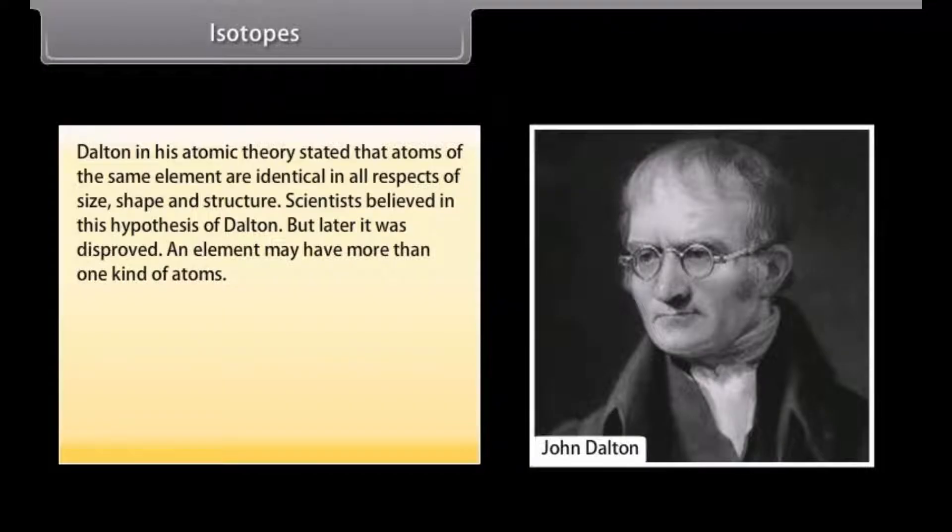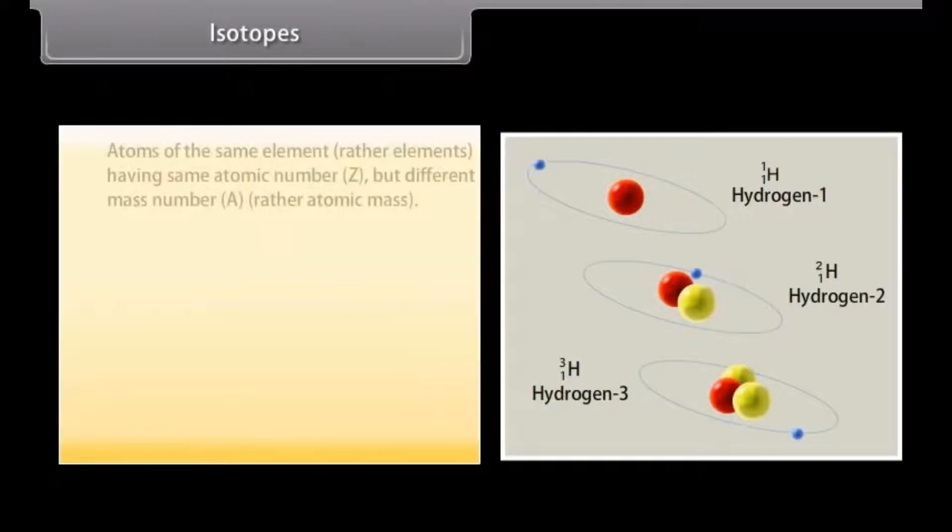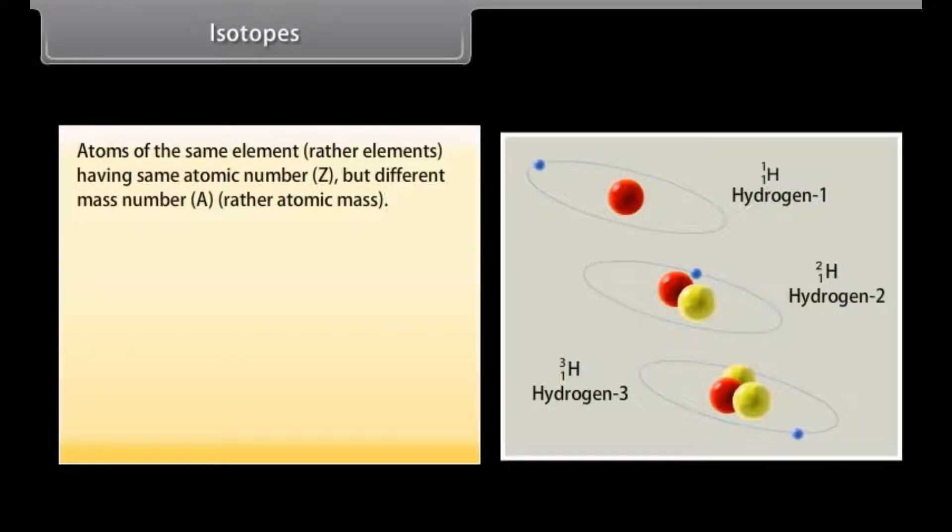Isotopes. Dalton in his atomic theory stated that atoms of the same element are identical in all respects of size, shape and structure. Scientists believed in this hypothesis of Dalton but later it was disproved. An element may have more than one kind of atoms. They may have same number of electrons and protons, that is, same atomic number. But they may differ from each other with respect to number of neutrons, that is, they may have different mass number or atomic mass.